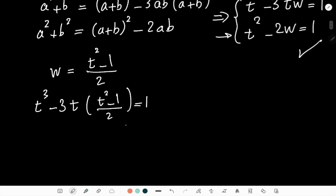then I get t³ - (3/2)t³ + (3/2)t = 1. And if I just further simplify this equation, you can do it also as well. t³ - 3t + 2 = 0.